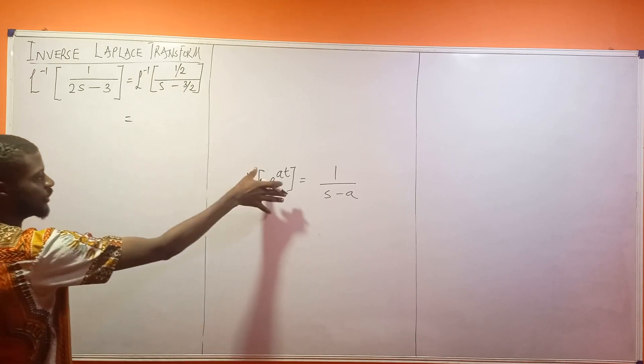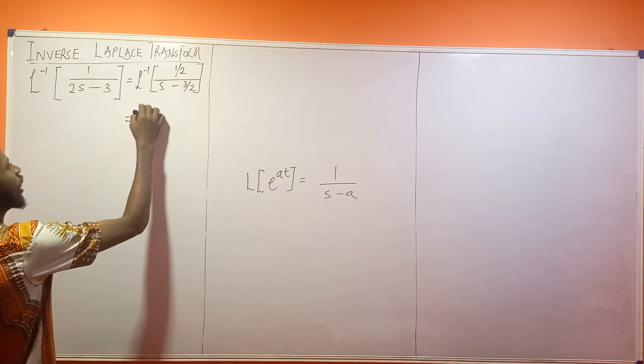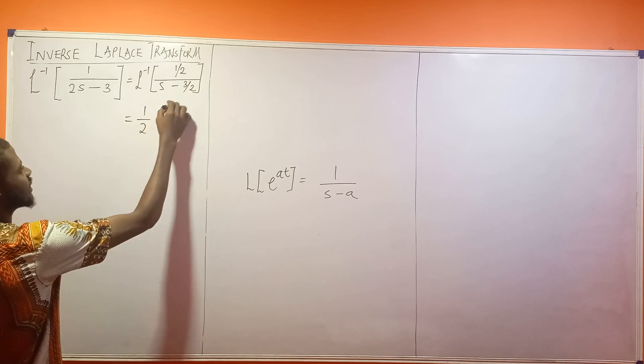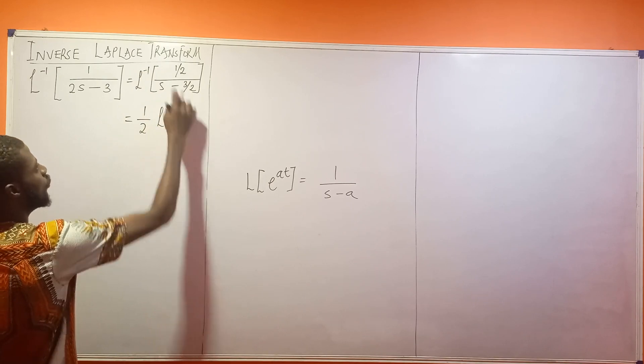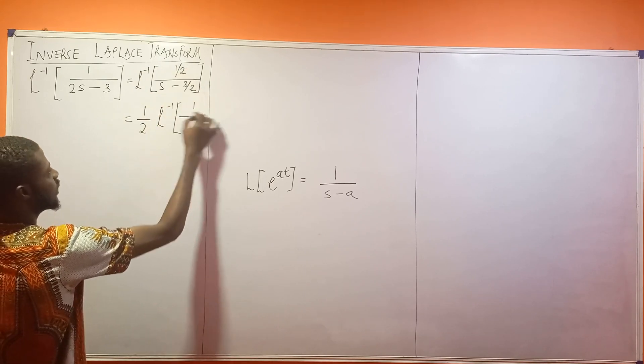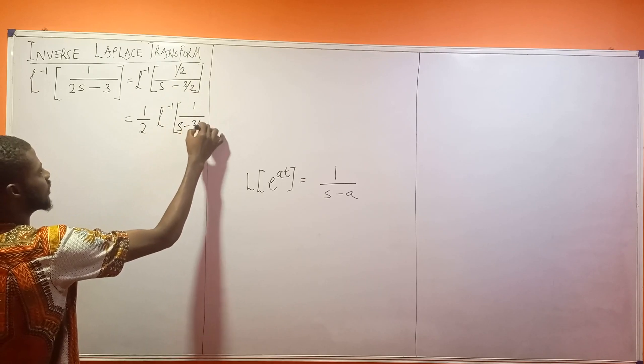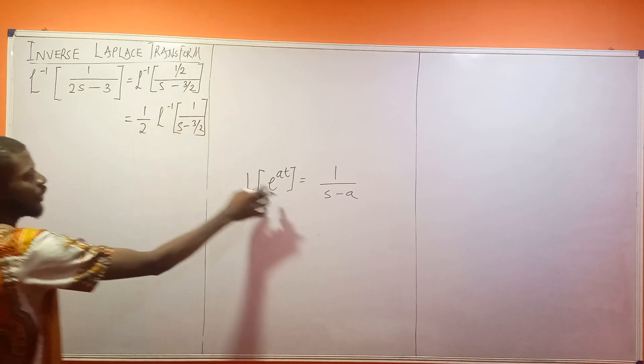So this is 1 all over 2 inverse Laplace of what will be left here is 1 obviously divided by s minus 3 over 2. Now if you compare these two together.